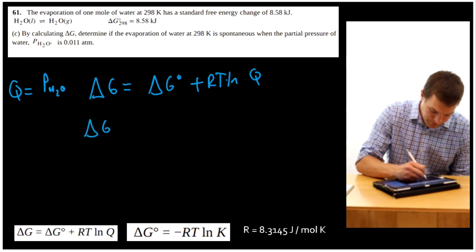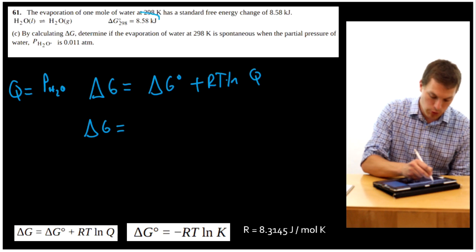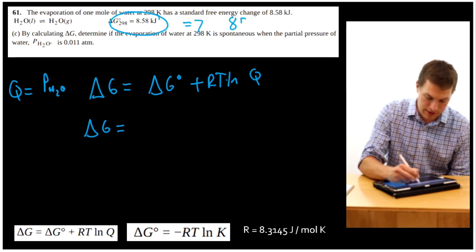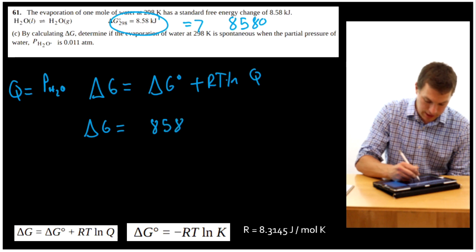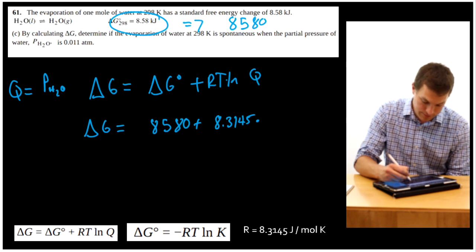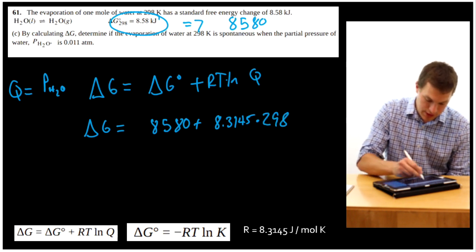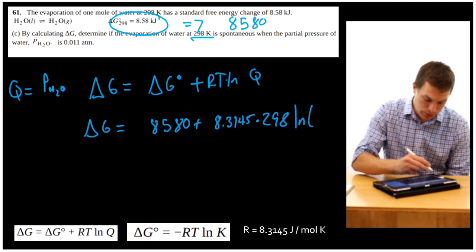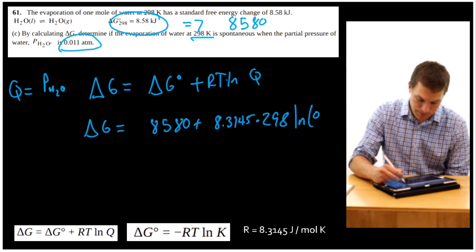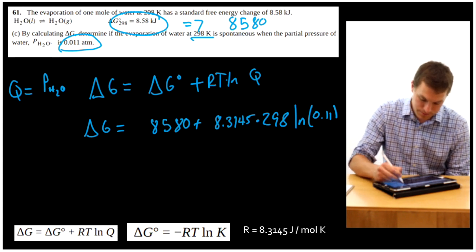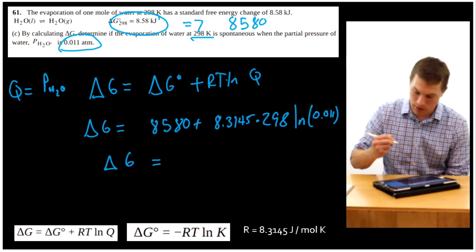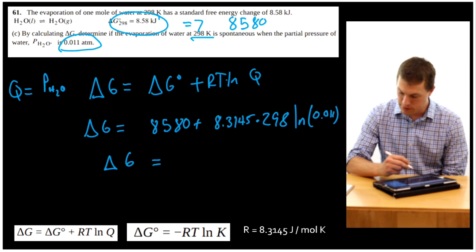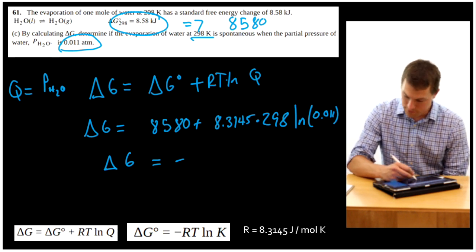All right, so let's calculate that. Delta G equals delta G standard state. And then once again, we're going to use our converted value of 8580. So 8580 plus R, which is 8.3145, times temperature, again at 298 Kelvin. And it gave us that temperature in our problem, times ln of Q, which in this case is just 0.011. All right, when we calculate that, we're going to get our new Gibbs free energy, which is negative 2590 joules per mole.